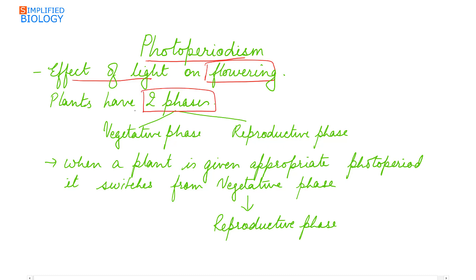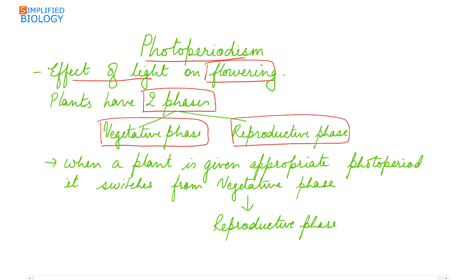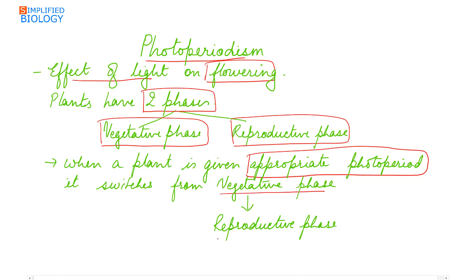Plants have two phases in the life cycle: one is the vegetative phase where growth occurs, and the other is the reproductive phase in which flowering takes place. When a plant is given an appropriate photoperiod or light condition, it switches from the vegetative phase to the reproductive phase.